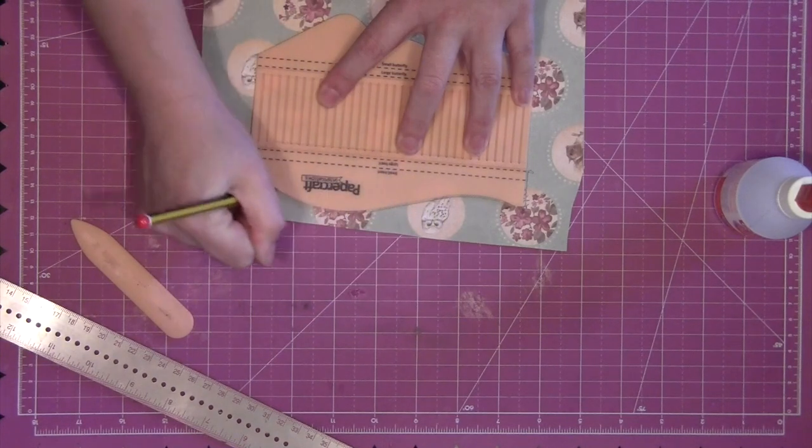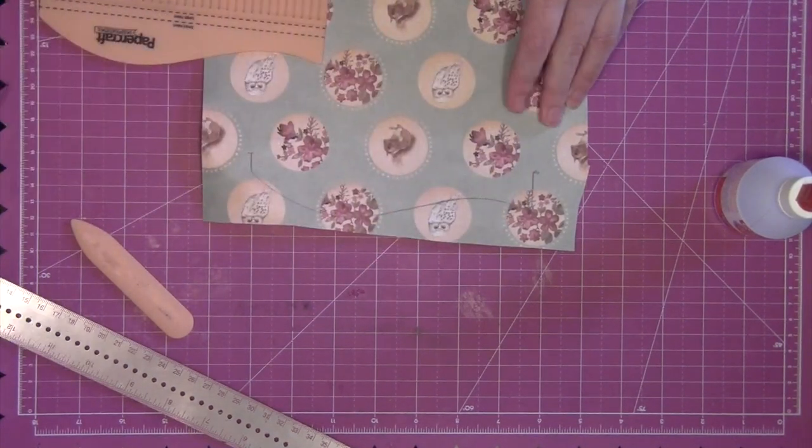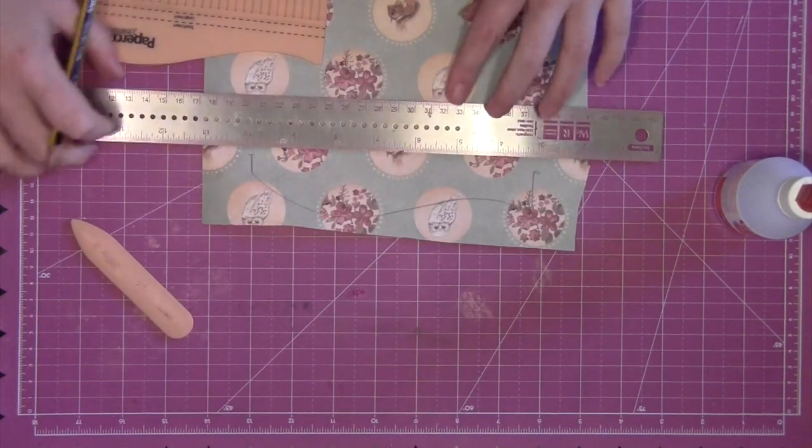Again, I'm marking to the large heart shape, drawing around the template, and then I'm going to go back and fill in the line that I need to cut out here.